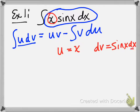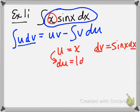The dx is always going to go with the dv section. The reason I picked x for u is because we're going to find its derivative, which is 1 dx — that's du. And since we know dv, we're going to find its integral. When you integrate sin, you get negative cosine.